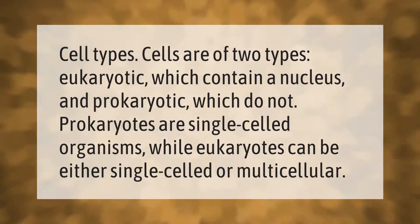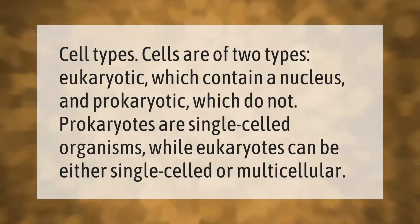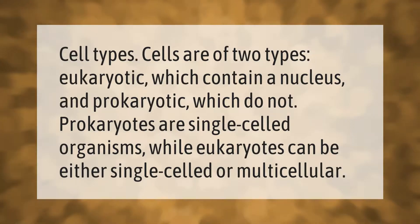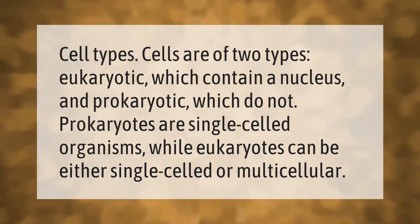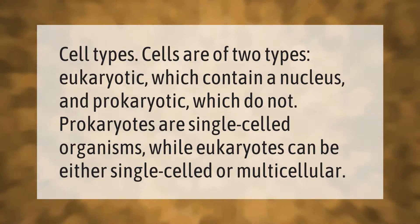Cells are of two types: eukaryotic, which contain a nucleus, and prokaryotic, which do not. Prokaryotes are single-celled organisms, while eukaryotes can be either single-celled or multicellular.